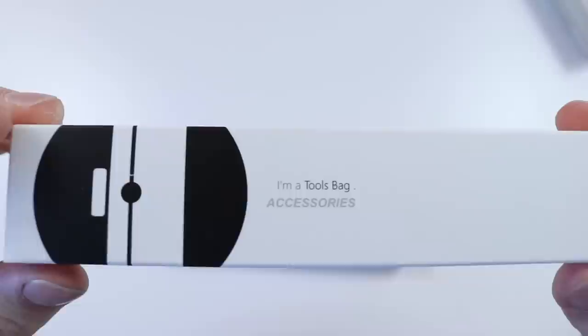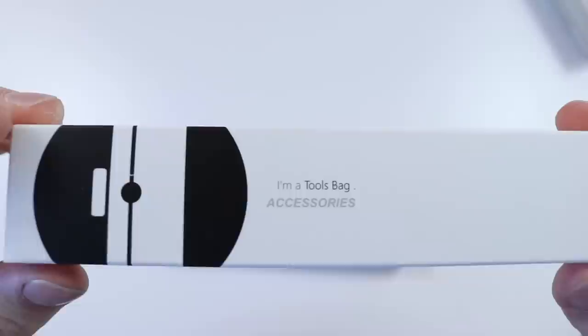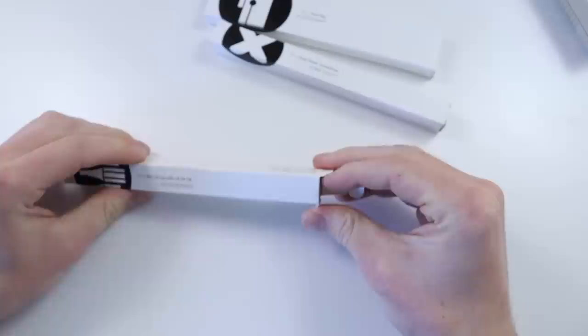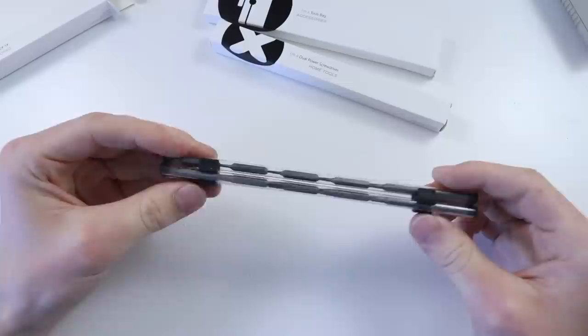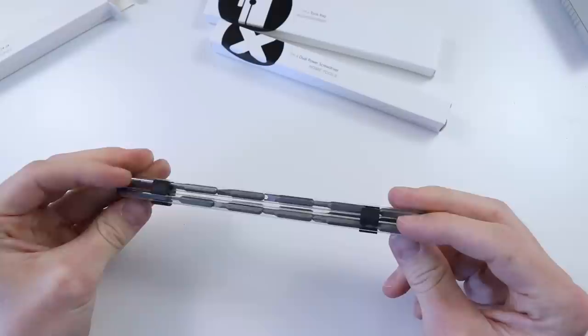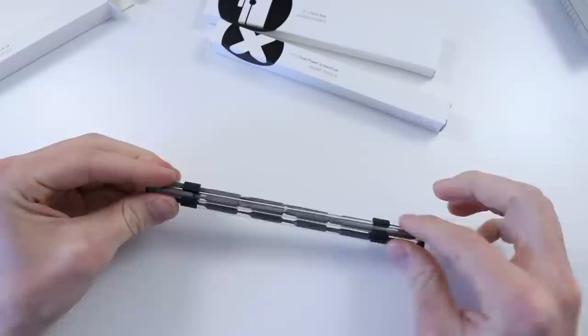We are left with three boxes. I'm a tools bag. I'm a dual power screwdriver. I'm a bits group with one hashtag, two hashtag, three hashtag. Let's have a look at what this is then. This is the bits group. We've got these kind of three tubes here with what I assume is just all the different bits. That's not the best design choice to me because that would mean if I wanted one, I'm going to have to take them all out.